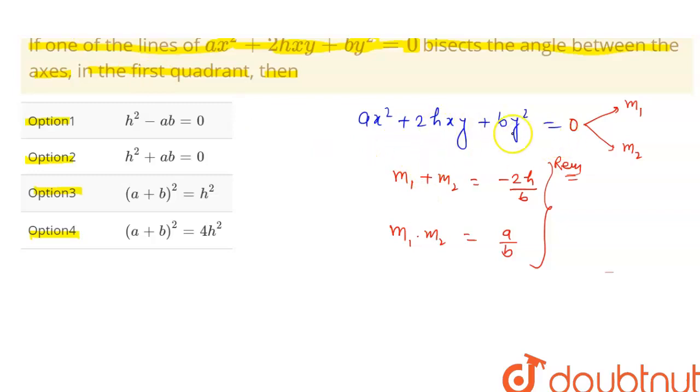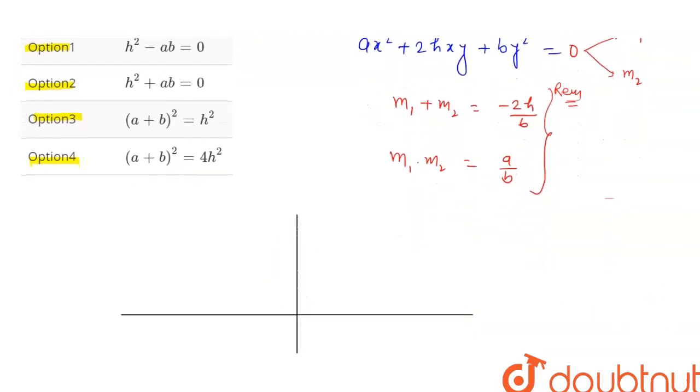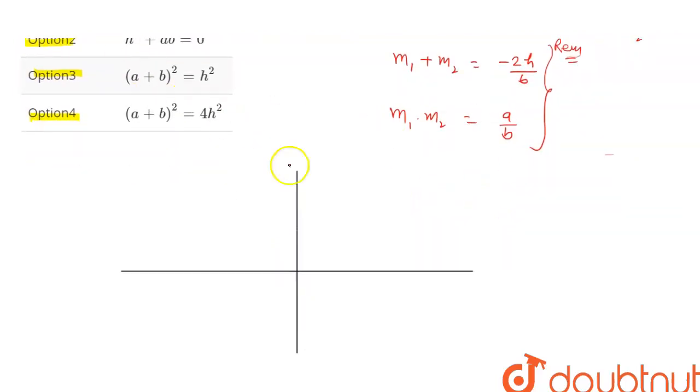Now, the question is saying one line bisects the angle between the axes. Let's suppose our coordinate axis is this: this is the x-axis, this is the y-axis, and this is the origin. We know the angle bisector of coordinate axes is y = x. y = x is the angle bisector of the first quadrant and third quadrant.